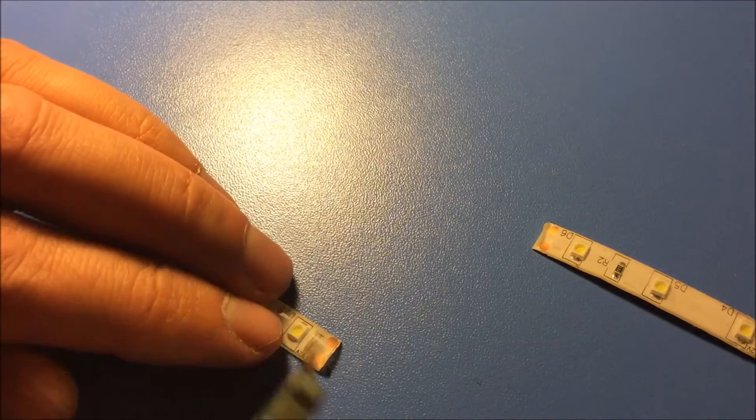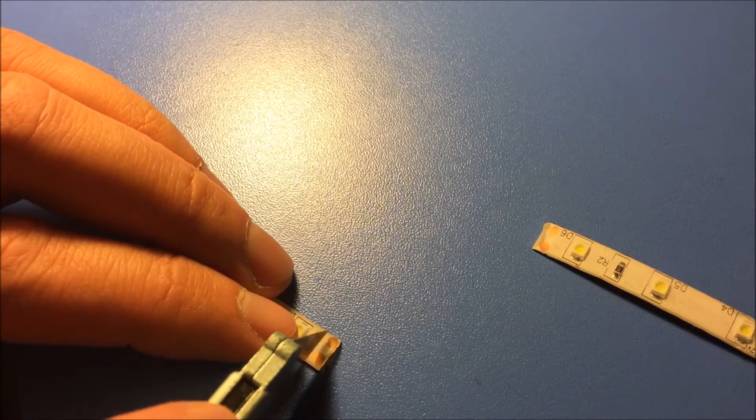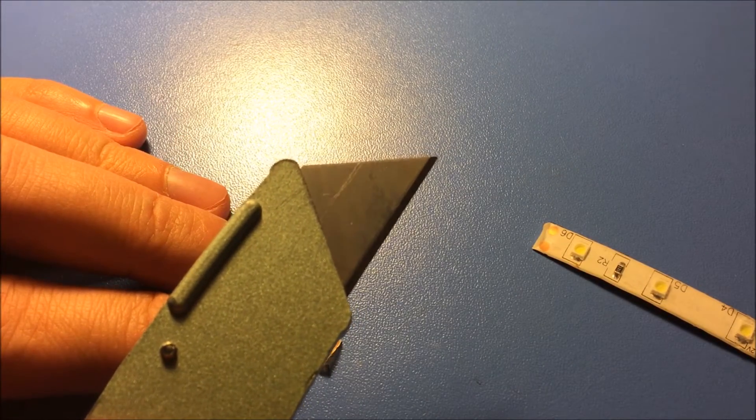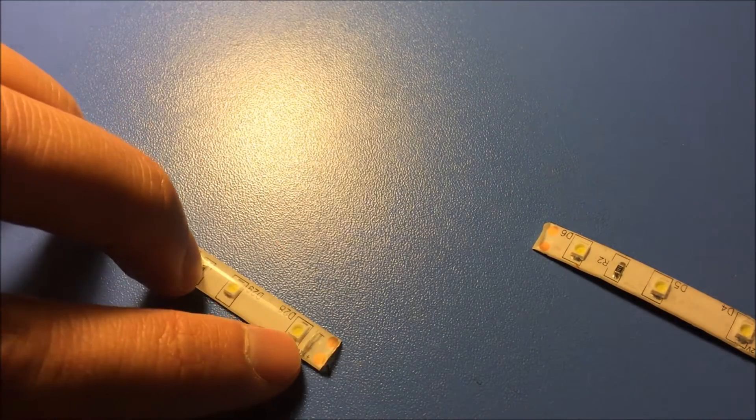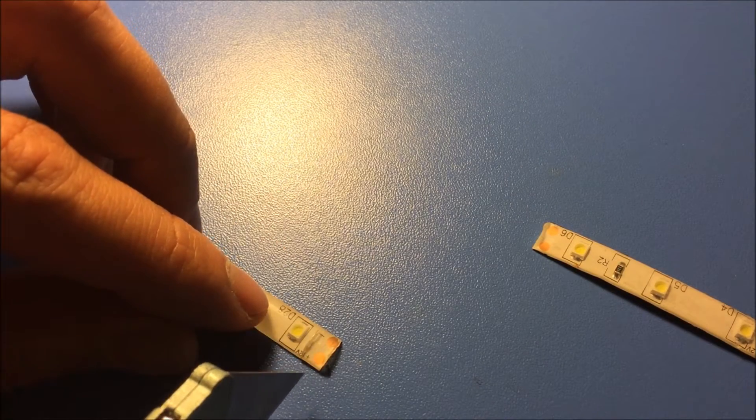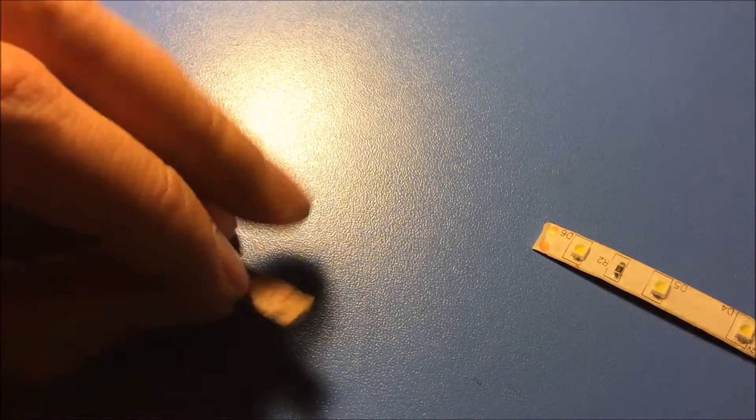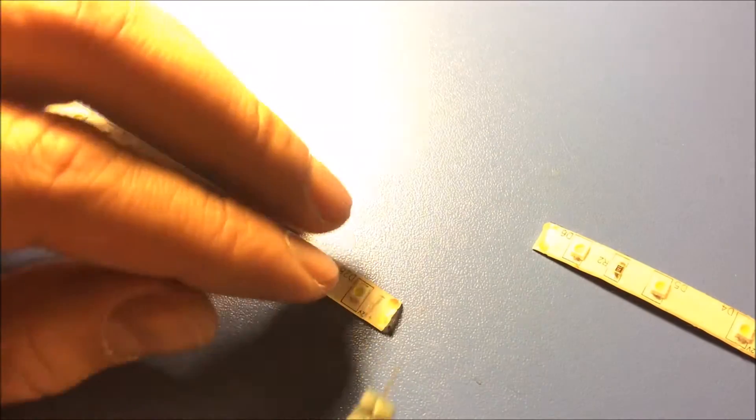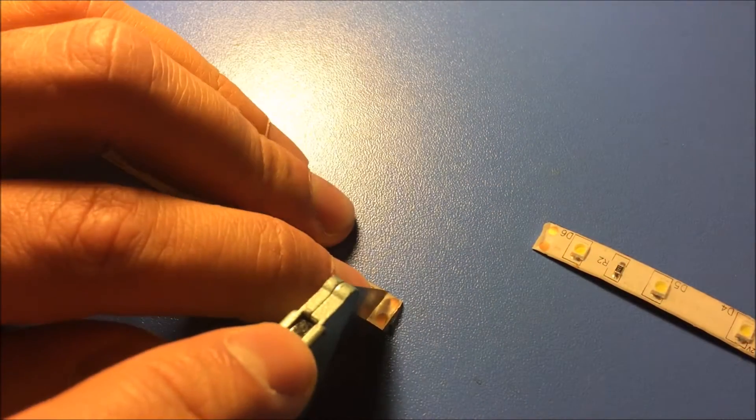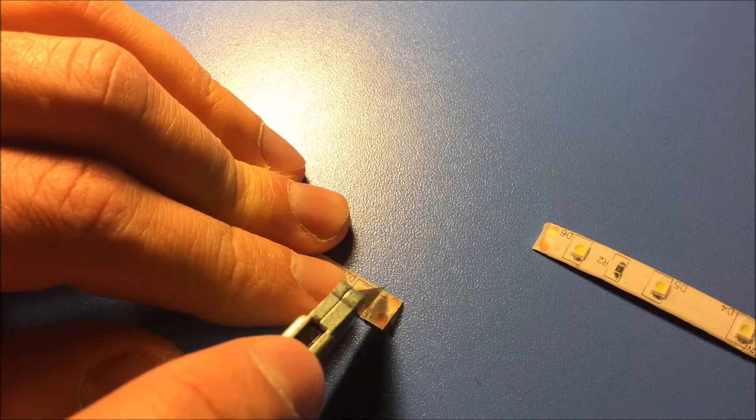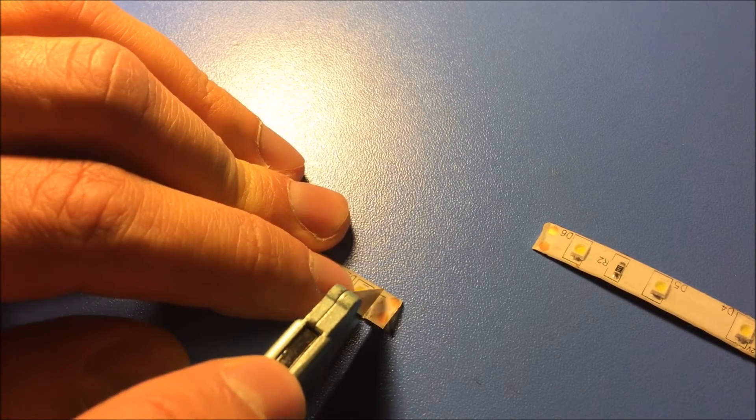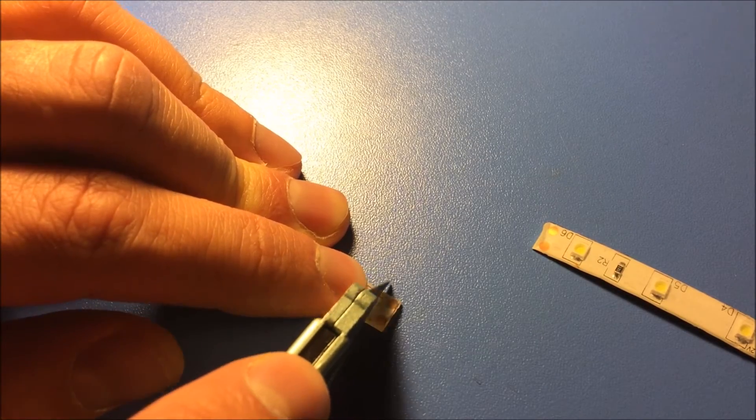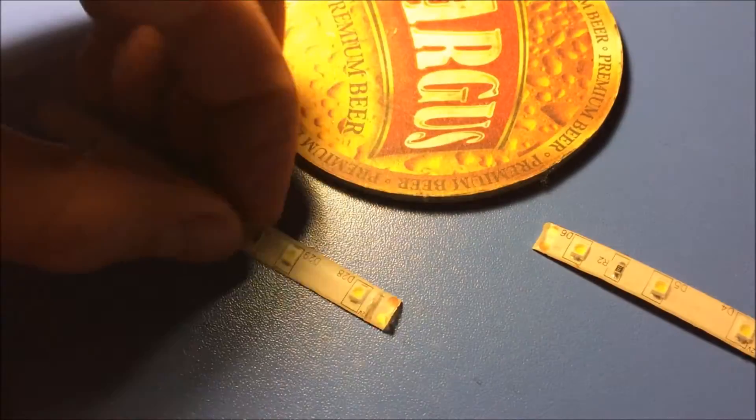The first thing you need to do is to remove the water protection. I am going to use a cutter for this job, but you must be really careful not to cut all the way down to the LED strip because you will damage the connection underneath. I have done that some time. Just a little bit of pressure here and cut it.